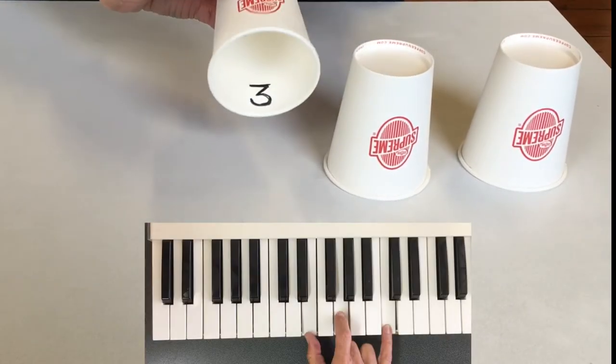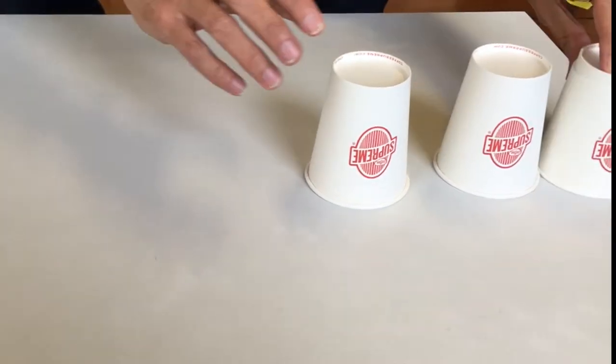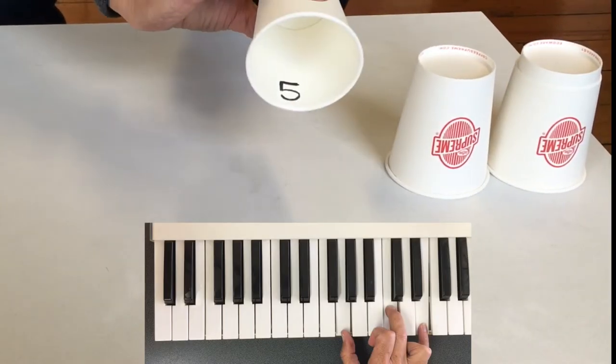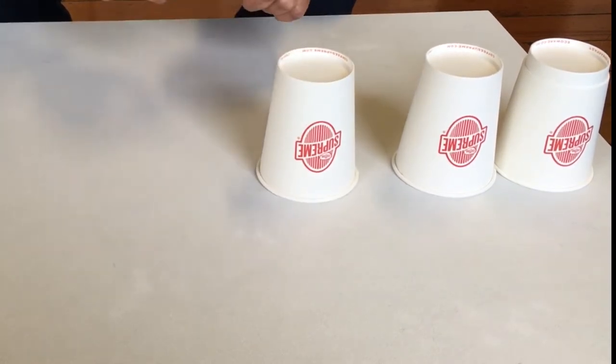Let's review that. If the root is lowest, it's root position. If the third is lowest, that's the first inversion. And if the fifth is lowest, it's second inversion.